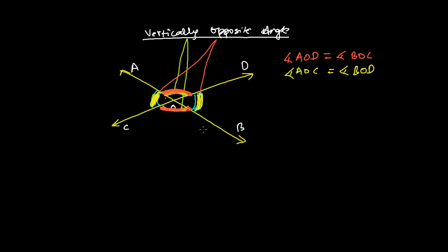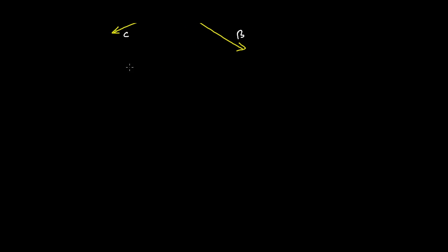So if we want to prove, then we have to make a small figure, or we can do in this figure also. Let's draw a small figure again. Let's say this is line PQ and this is line RS. This is point O.